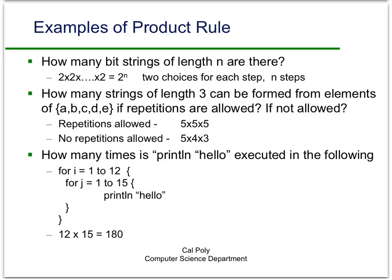Finally, the programming version: how many times is a statement executed inside nested loops? Here's a simple example where the outer loop has i going from 1 to 12, and the inner loop has j going from 1 to 15. So for each i, the inner loop executes 15 times, and there are 12 values of i. So 12 times 15 equals 180.